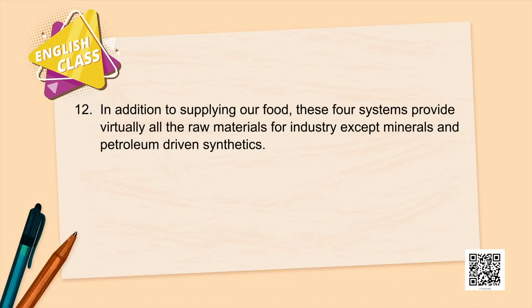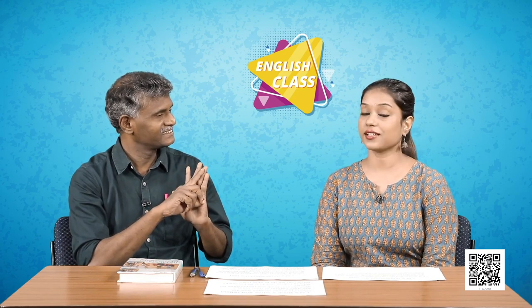In addition to supplying our food, these four systems provide virtually all the raw materials for industry, except mineral and petroleum-driven synthetics. These major resource sources are essential. Unfortunately, they are damaged. In large parts of the world, human claims on these systems are reaching an unsustainable level — the point where their productivity is being impaired. We have exploited these four domains to the extent that we can no longer sustain them.